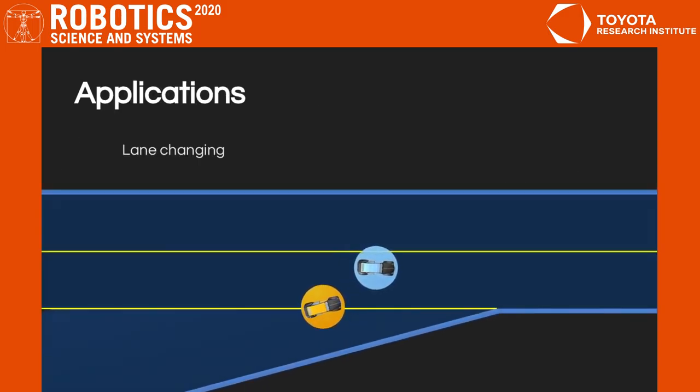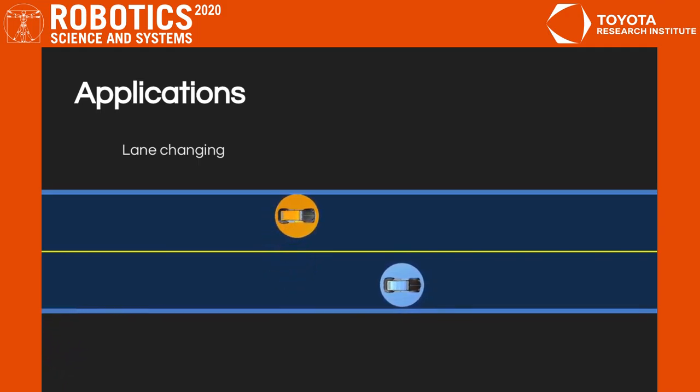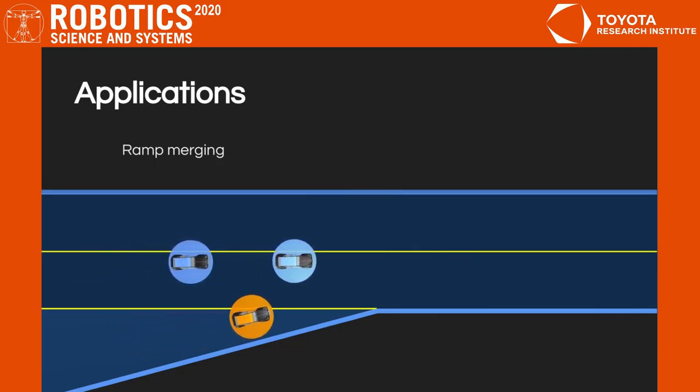We apply ALGAMES in the autonomous driving context. Indeed, many maneuvers, like lane changing, ramp merging, and intersection crossing, involve a high level of interaction between vehicles. We assume a single car is computing the trajectories for all cars in its neighborhood, so as to find its own trajectory to act safely among the group.